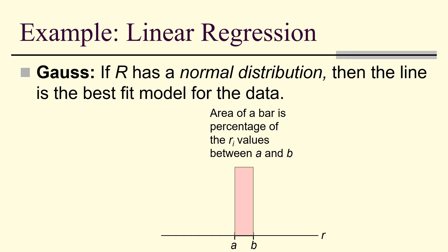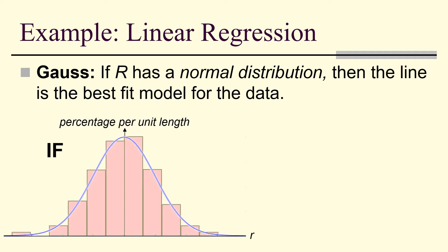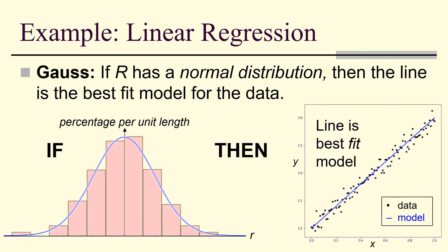So, what do I mean by that? Well, if you look at the area of a bar over the real axis, closed interval a, b, then the area of the bar is the percentage of the residuals that are between a and b. And if you get a bell curve shaped histogram of the residuals, then you get the line is the best fit model.